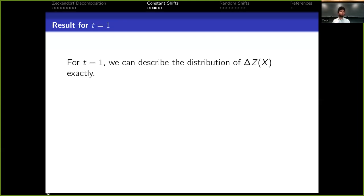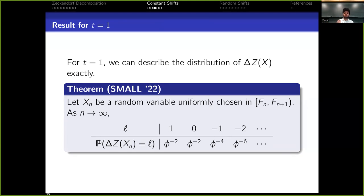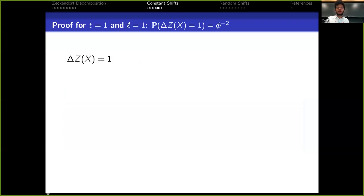Okay, so for t equals one, we can describe distribution of delta z exactly. The theorem that we've proved is that when x is uniformly chosen in that interval, as n goes to infinity, the probability that the variable delta z is one is going to be φ⁻², that zero is going to be φ⁻², that minus one is going to be φ⁻⁴. And after that, it follows this geometric progression with ratio φ⁻². We're going to prove today that fact for t equals one and ℓ equals one. So basically, we're going to prove that the probability that delta z is going to be one is φ⁻².